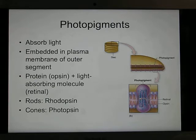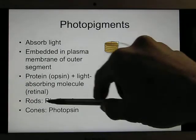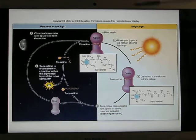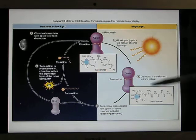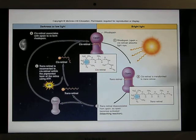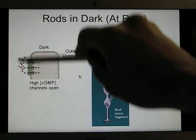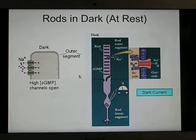Rods and cones have photopigments and use different pigments to respond to light. The rod system uses rhodopsin. We'll use rhodopsin to explain the mechanism of how light is converted into a signal. When light hits, it causes a conformational — structural — change. In organic chemistry, this is called the cis-to-trans isomerization, which causes the structural change.